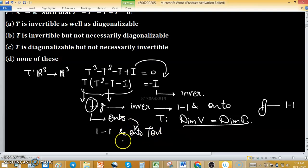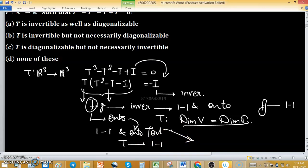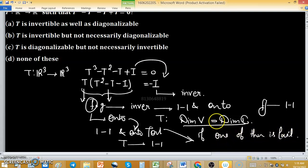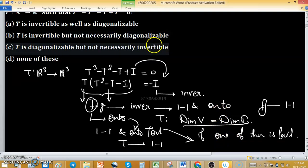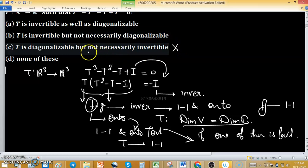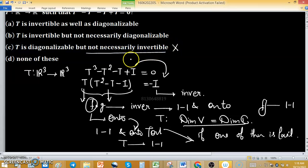That's why T is one-to-one. If one of them fails, then T is neither one-to-one nor onto. So option C is discarded because it says 'not necessarily invertible.' Now we move to the question of diagonalizability.